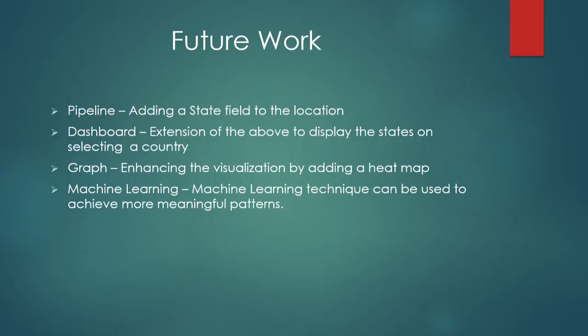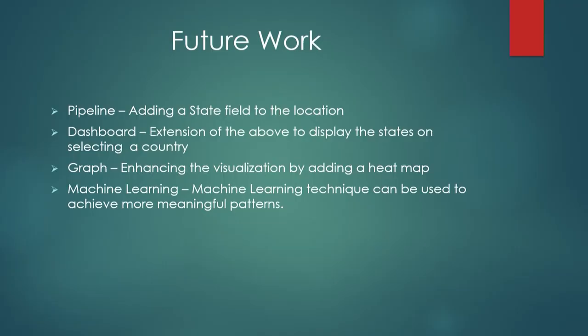For future work, the current geolocation supports only country and city. We can obtain the state of the learner using IP address databases available on the internet, then add a new field to the course activity location table. In the dashboard, we can update the pipeline extension. Instead of the current graphical representation, a geographical heat map could be used, and machine learning techniques could also be applied to achieve more meaningful conclusions.